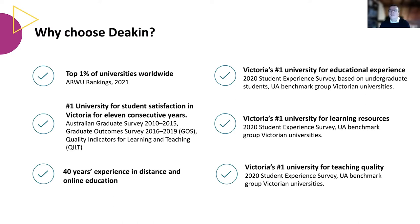I would like to really strongly have you consider Deakin as the university of your choice, and there are many good reasons to do so. Among those is the fact that Deakin University is among the top one percent of universities worldwide with regards to its teaching and research portfolio. Very importantly, and something we are extremely proud of, Deakin University is number one in Victoria for student satisfaction for 11 years running, and this includes students voting Deakin number one for its educational experience, learning resources, and teaching quality.